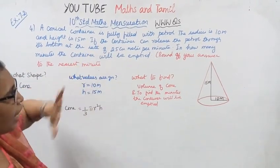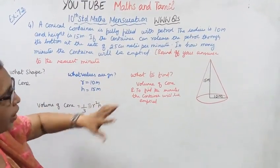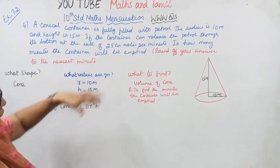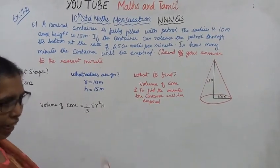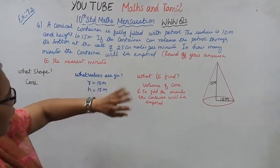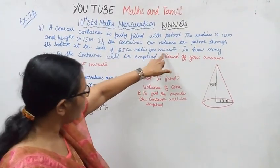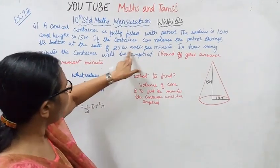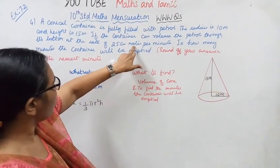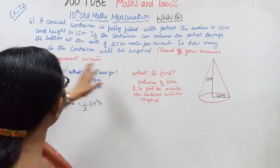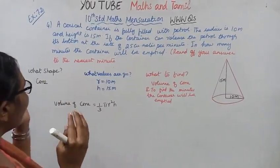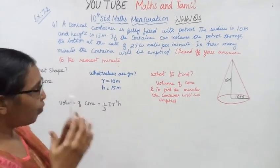One conical container with petrol. The radius is 10 meters, height is 15 meters. The container releases petrol at the rate of per minute 25 meter cube. How many minutes the container will be empty? In how many minutes the container will be empty?